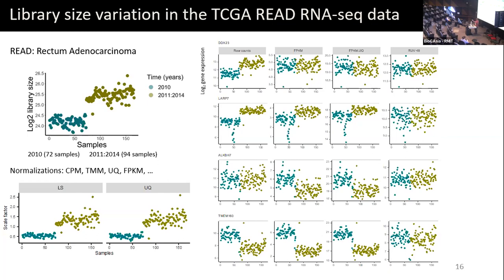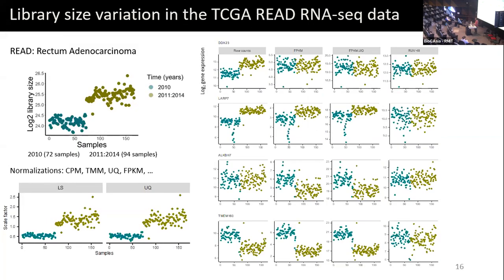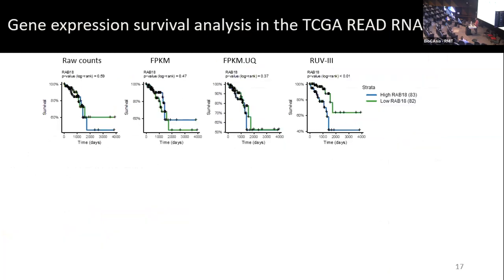You may argue this is a batch effect, not library size, and maybe batch effects are more complex than library size. We looked at a couple of TCGA cancer types where everything was done in one batch — even the RNA-seq, everything in one batch — and we still didn't see that all genes are proportional to library size. If you use those scaling factors, you may end up adding noise or not fixing all gene expression.